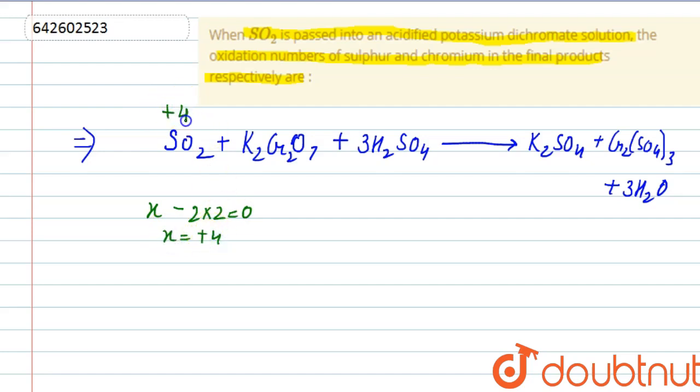Here, sulfur is in plus 4 oxidation state and in K2Cr2O7, we will find the oxidation state of Cr. Now we know the oxidation state of K is plus 1, so it will be 1 into 2 plus 2x, we don't know the oxidation state of Cr minus 7 into oxidation state of O is minus 2. So it will be equal to 0, from here we can get oxidation state of Cr that will be plus 6.